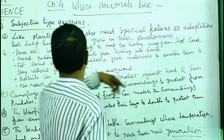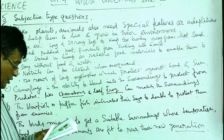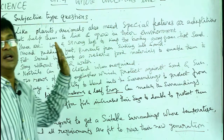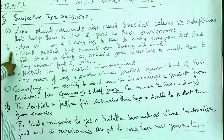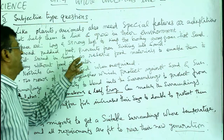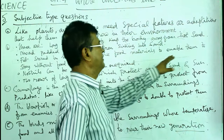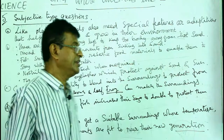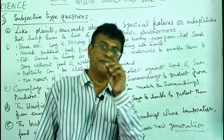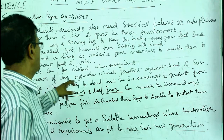For subjective questions — Question 1: Why do animals need to adapt? Answer: Like plants, animals also need special features or adaptations that help them to live and grow in their environment or surroundings. Question 2: What are some adaptive features of the camel? Answer: The camel, known as the ship of the desert, has these adaptations: long strong legs which keep the body away from the hot sand.